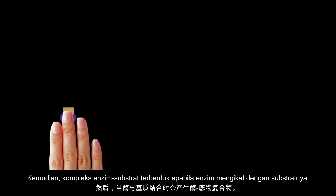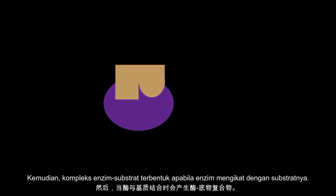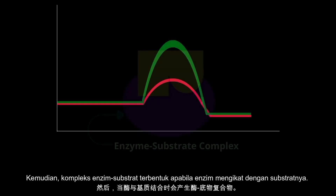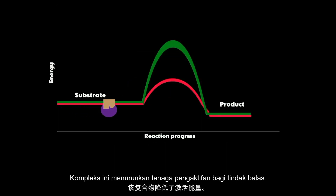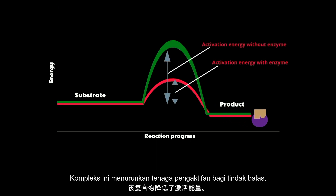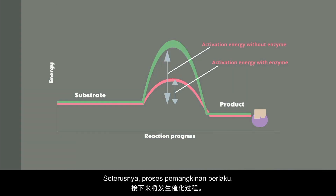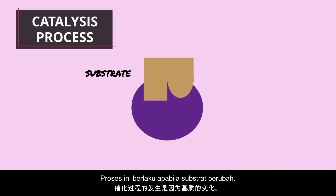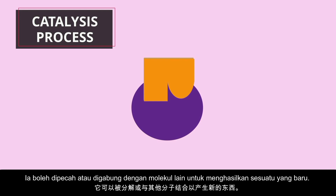Next, when the enzyme binds with its substrate, it forms an enzyme-substrate complex. This complex lowers the activation energy of the reaction. Then a process called catalysis happens. Catalysis is when the substrate is changed — it could be broken down or combined with another molecule to make something new.